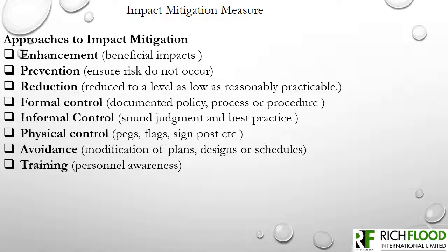Informal control involves the application of sound judgment and best practice in mitigating impacts. Physical control involves the application of physical processes or instruments — such as pegs, flags, and signposts — not necessarily requiring any special technology. Avoidance involves the modification of plans, designs, or schedules to prevent the occurrence of an impact. Training involves personnel awareness in specific and specialized areas.